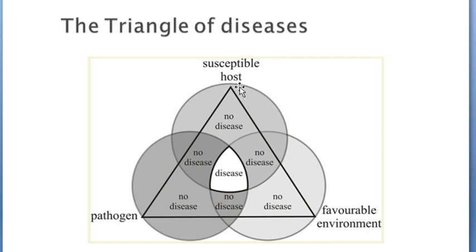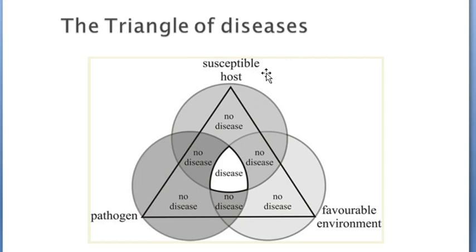Or finally, when we are in a situation where the pathogen is almost always present and the conditions are almost always favorable — as is the case for some endemic diseases like trypanosomiasis in livestock — farmers or stakeholders can decide to select a breed that is not susceptible, that is a breed resistant to that particular pathogen.